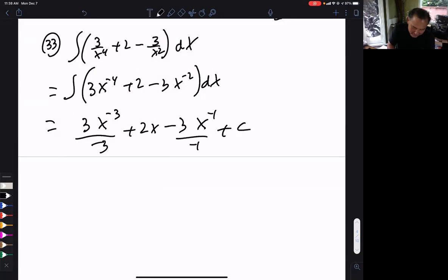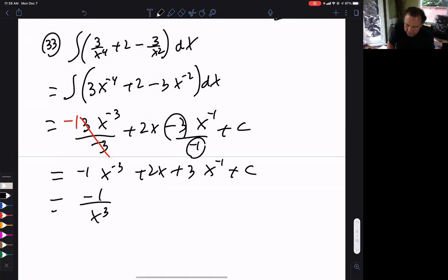But we can simplify. These cancel, leaving a negative 1. So it's going to be negative 1x to negative 3 plus 2x. And these make a plus 3x to negative 1 plus c. And if you want, you can move the negative x to the bottom because it's prettier. And there's my answer.